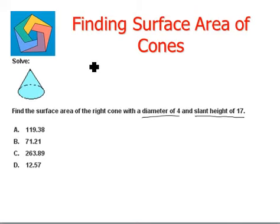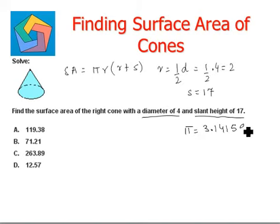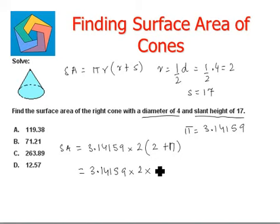The next question: find the surface area of the right cone with a diameter of 4 and a slant height of 17. The radius r = 4 ÷ 2 = 2, and s = 17. Using SA = πr(r + s): SA = 3.14159 × 2 × (2 + 17) = 3.14159 × 2 × 19.